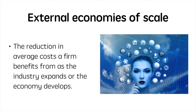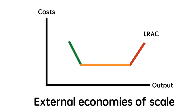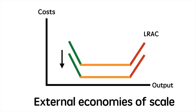External economies of scale are the reductions in average costs a firm benefits from as the industry expands or the economy develops. External economies of scale drive down average costs and thus force a firm's long run average cost curve to shift downwards. This is demonstrated by the shift from LRAC to LRAC1.